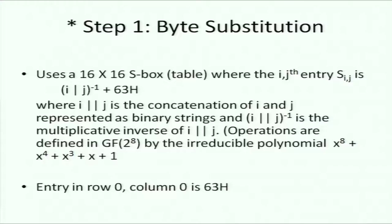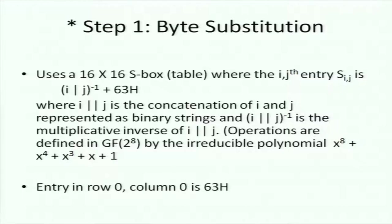For byte substitution, we use a lookup table. Each 8-bit element of the 4×4 array is substituted by another 8-bit quantity from the table. The 8 bits are split: the first 4 bits are the row index and the next 4 bits are the column index, giving a 16×16 lookup table. The table values are obtained through field mathematics — specifically taking the inverse of a particular element in GF(2^8).